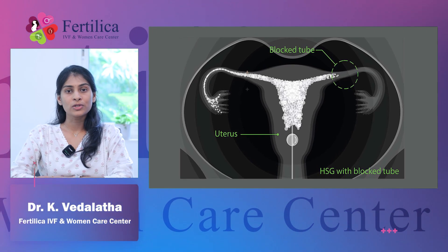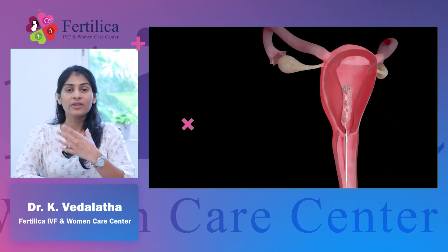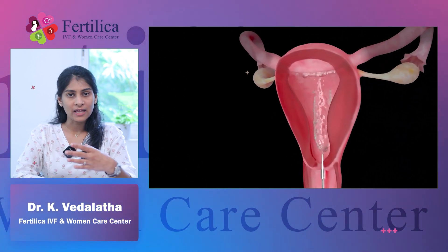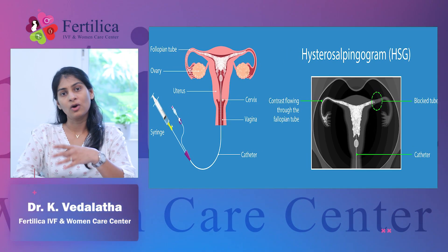HSG is a diagnostic tool which is used to check the fallopian tubes and also to outline the internal shape of the uterus. In this procedure, a catheter is sent through the vagina and an iodine-based contrast dye is sent through the catheter into the uterus and the fallopian tubes. Then a series of x-rays will be taken, through which we will find out whether the fallopian tubes are open or blocked.